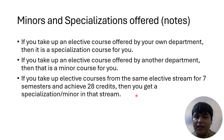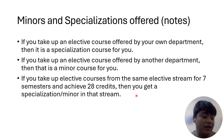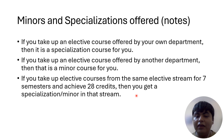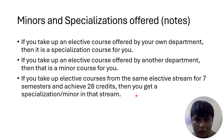If you take up elective courses from the same elective stream for seven semesters and collect 28 credits — because each elective course here is of four credits — then you get a specialization degree or a minor degree in that stream. As simple as that.